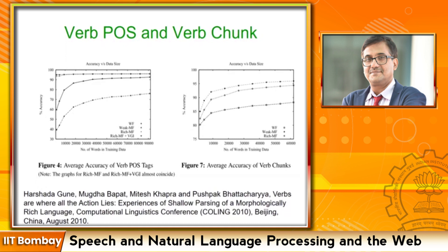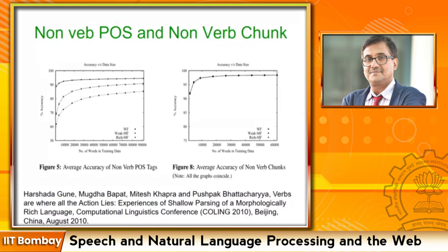We did not write rules explicitly — we could have — but instead we absorbed them very elegantly in terms of morphological features embedded into the conditional random field. That was the contribution of the work, appreciated by reviewers and the audience. So verbs are a difficult situation, but use morphology and the difficulty vanishes quite a lot. Non-verb POS tags and non-verb chunks are also shown in the curves.